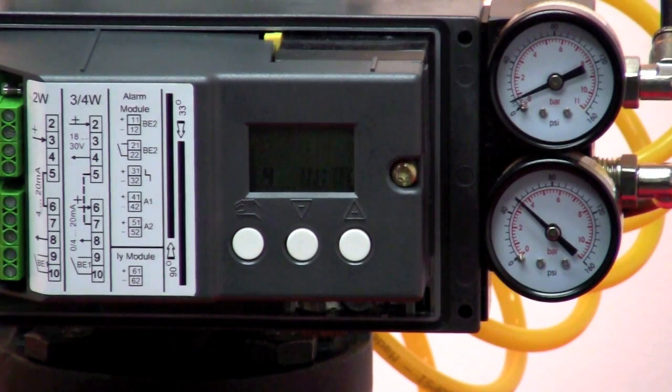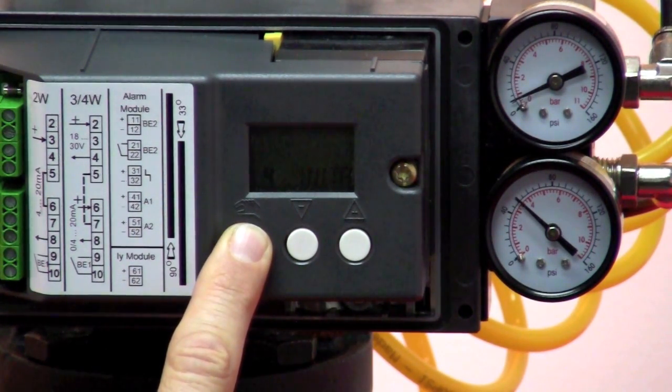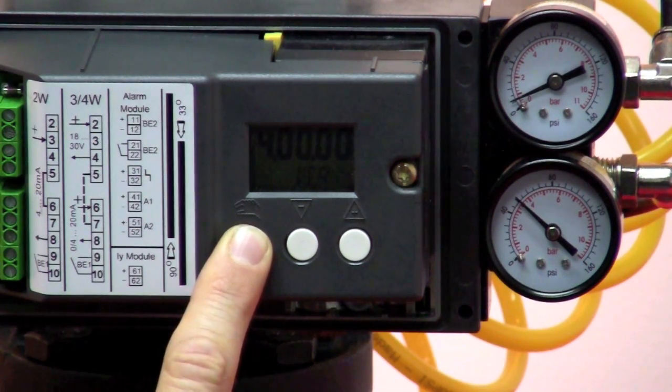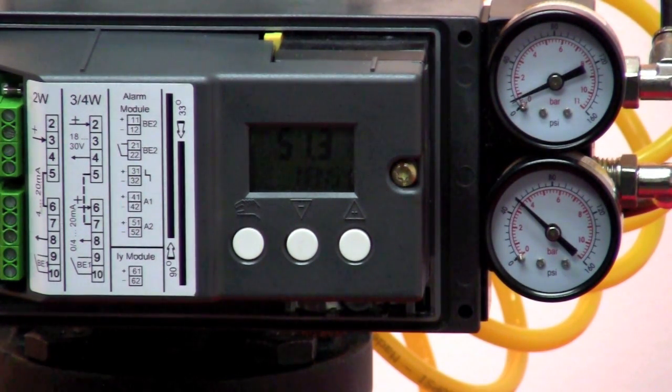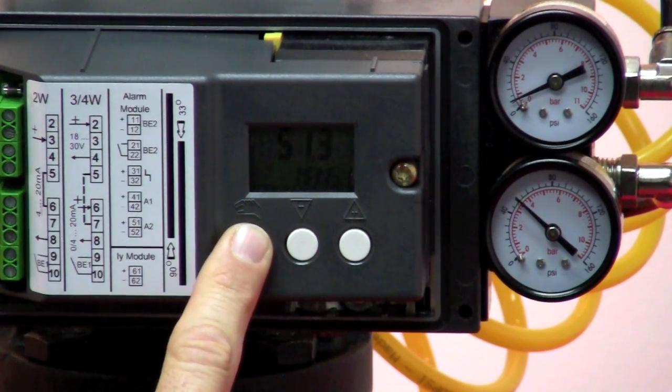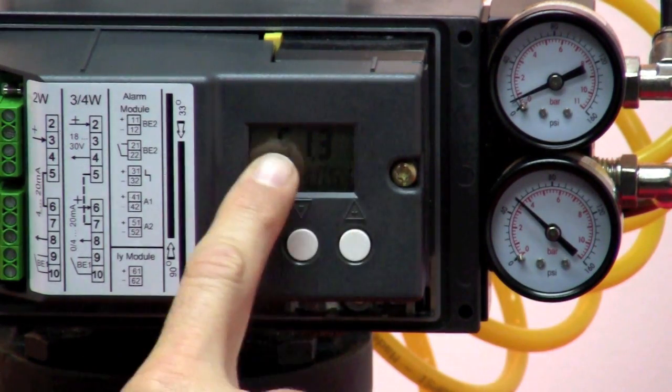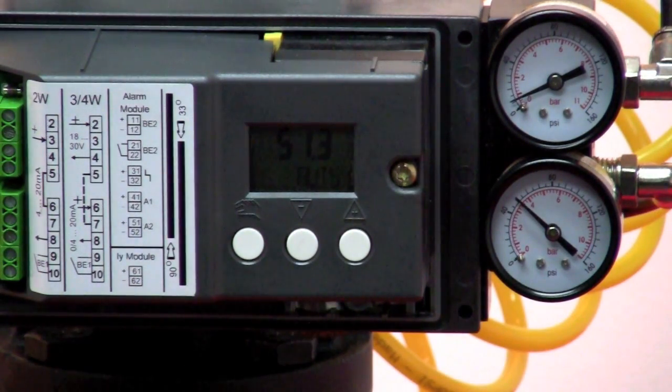Now our initialization is finished. So I exit the program mode by pressing and holding the mode key. And you can see that I emerge in manual mode. I can place the positioner in automatic mode by hitting the mode key once and you can see that my input signal is 51% and that's exactly where the positioner is now.